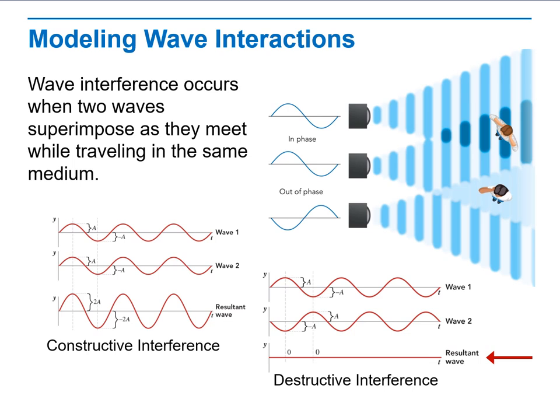Here we have destructive interference. Total cancellation or a flat line results from destructive interference. Waves can cancel each other.